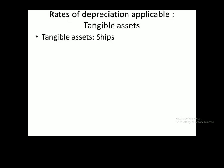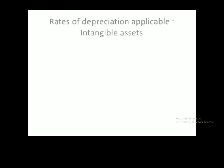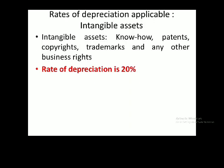Moving on to the next tangible asset — ships. This covers ships floating on the ocean, inland water vessels, and speed boats. For all types of ships, the rate of depreciation applicable is 20%.